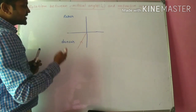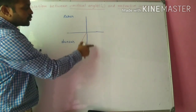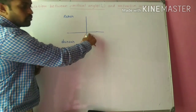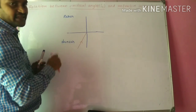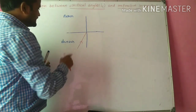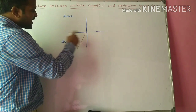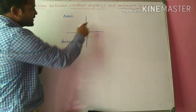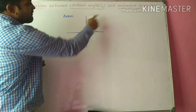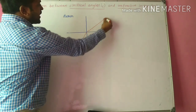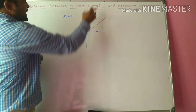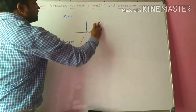Already we know that whenever the light ray travels from rarer medium to denser medium, in the denser medium the light ray moves towards the normal. That's the basic rule. Now here, the light ray is traveling from denser medium to rarer medium, so the light ray is moving away from the normal after refraction.